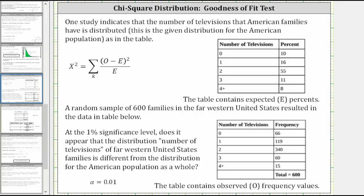Welcome to an example of the goodness of fit test using a chi-square distribution. In this example, we will not be determining chi-square manually using the formula. We will use the TI-84 to determine chi-square as well as the p-value.